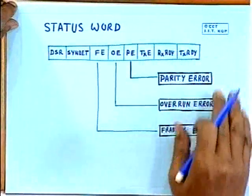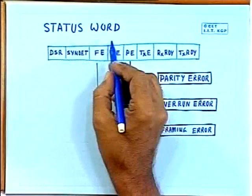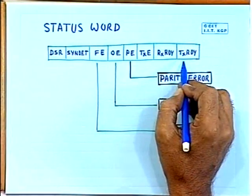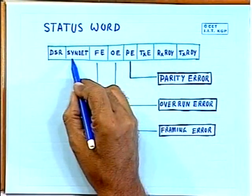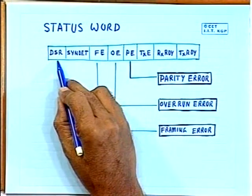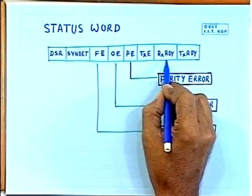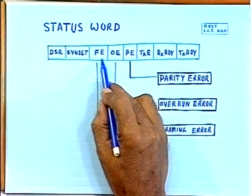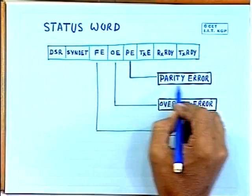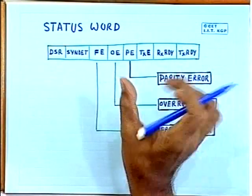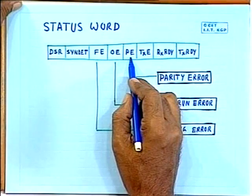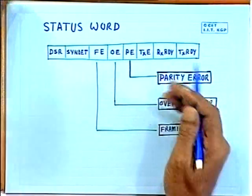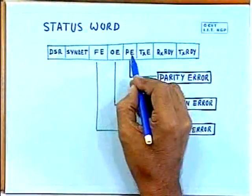Then there is the status word. You can read the status of various lines: TX ready, RX ready, TXC, syndet, and DSR. The parity error bit (PE) is set automatically if a received character has a parity error — this is automatically checked as each character is received. The overrun error bit is set when a second byte arrives before the first was read by the microprocessor.